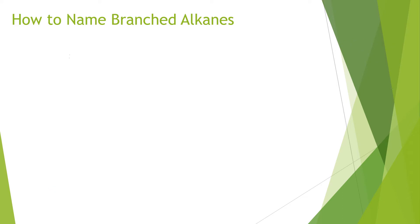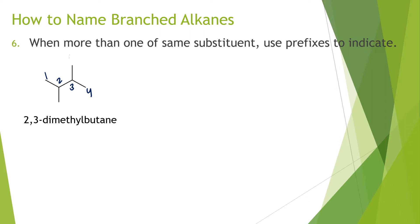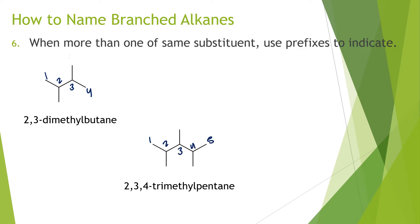When more than one of the same substituent is present, you use prefixes to indicate multiples. In this molecule the longest carbon chain is four carbons, and since both substituents are methyl groups, we don't say 2-methyl-3-methyl — we say 2,3-dimethylbutane, where 'di' indicates two of the same substituent. If there are three of the same substituent, we use 'tri,' giving 2,3,4-trimethylpentane with a five-carbon parent chain.